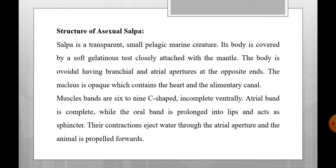The body of the asexual ozoid is covered by a soft gelatinous test closely attached to the mantle. The body is ovoidal, having branchial and atrial apertures at opposite ends. The nucleus is opaque and contains the heart and alimentary canal. Muscle bands are 6–9 C-shaped and incomplete ventrally. The atrial band is complete, while the oral band is prolonged into lips and acts as a sphincter. Their contractions eject water through the atrial aperture, and the animal is propelled forward.